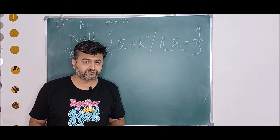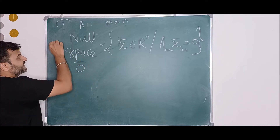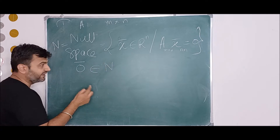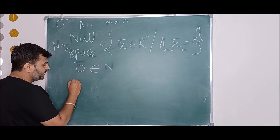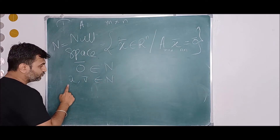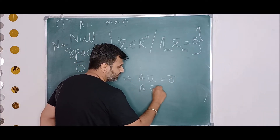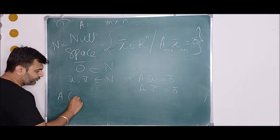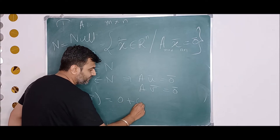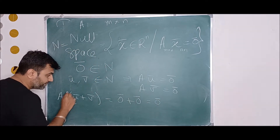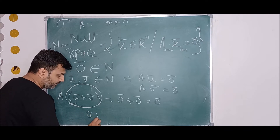To check that a subset is a subspace, you verify three conditions. First, non-empty: does the zero vector belong to this set N? Yes, because A times zero-bar equals zero. Second, closure under addition: if U-bar and V-bar are in N, then A times U-bar equals zero and A times V-bar equals zero. So A times (U-bar + V-bar) equals A U-bar plus A V-bar, which is zero plus zero equals zero. Therefore U-bar + V-bar is also in N.